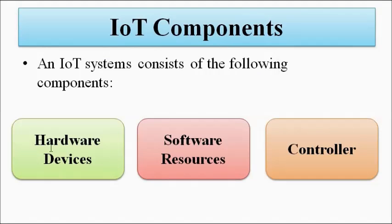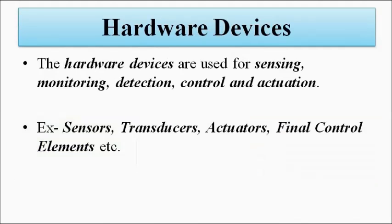First, the hardware devices. Hardware devices can be anything — they can be sensors for sensing and detection of various physical parameters, monitoring of various things, or actuators for converting the output into a suitable control action, to keep things under control within a certain level. We have all discussed sensors, actuators, transducers, instrumentation and process control, final control elements like that.